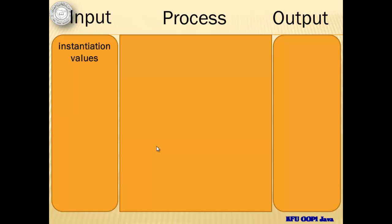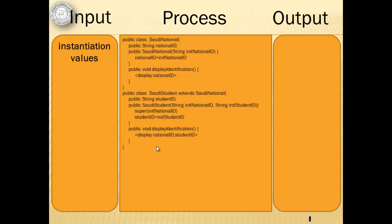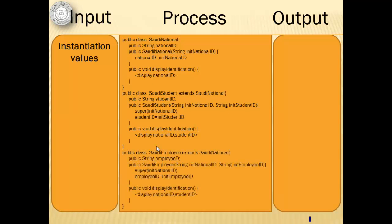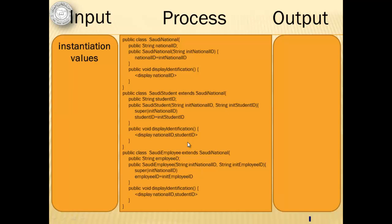Our input will be the instantiation values. For the process, we are going to create four classes. SaudiNational is the parent class or superclass, while SaudiStudent and SaudiEmployee are the subclasses because they extend SaudiNational. The last class is the one with the main method: the PolymorphismSample class. Our output will be the identification of the three class objects.